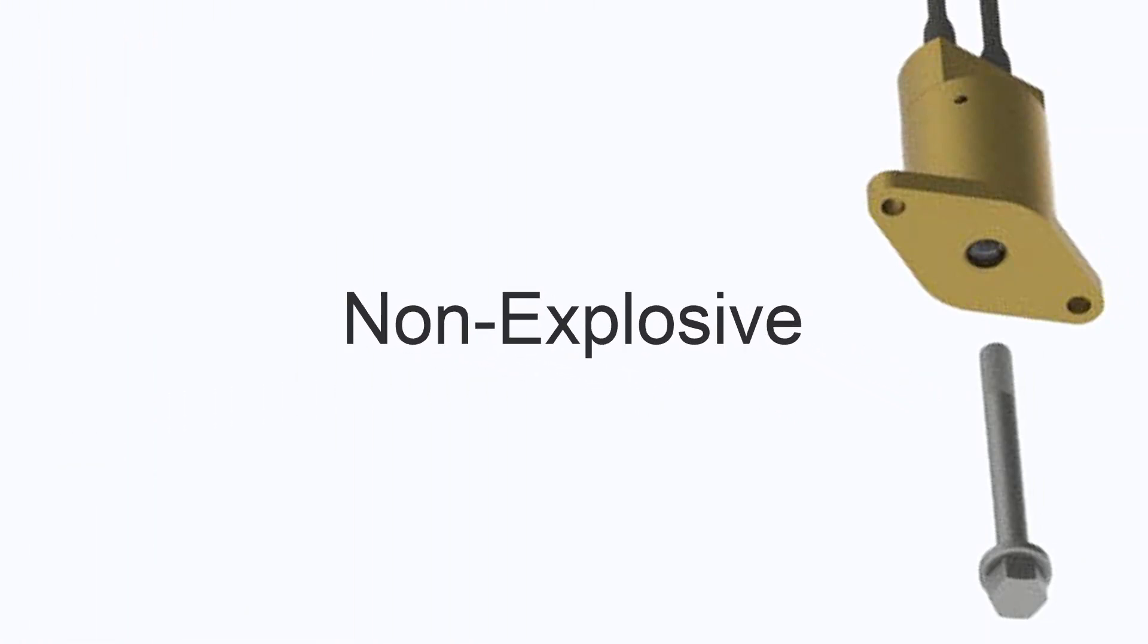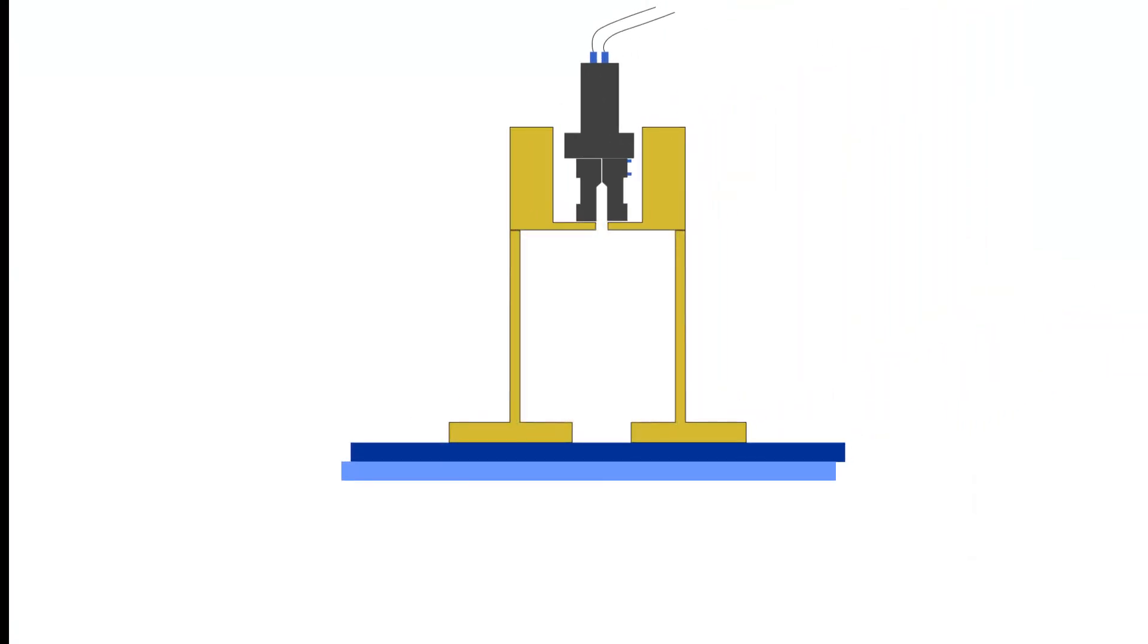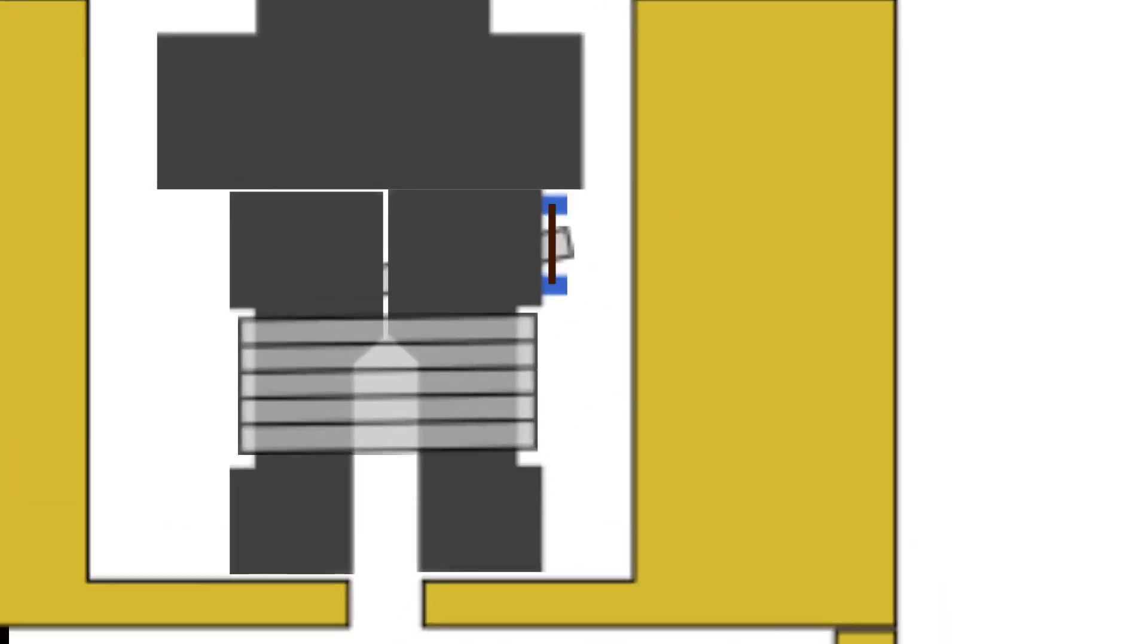One type of non-explosive HDRM is the split spool initiator. In this design, a groove is carved into the middle of a cylinder. The cylinder is split in half lengthwise, but is then held together by wrapping a tensile wire around it. One end of this wire is fixed to the frame of the HDRM and the other is hooked to a link wire.